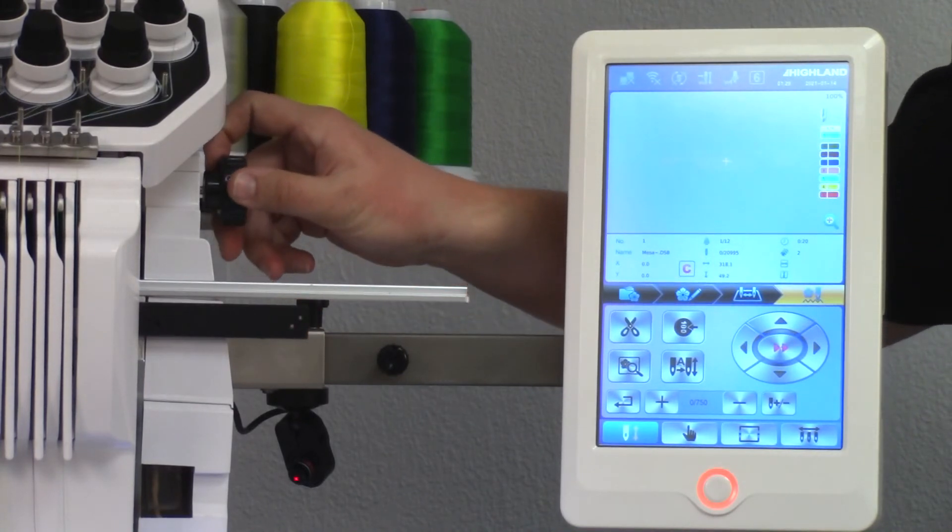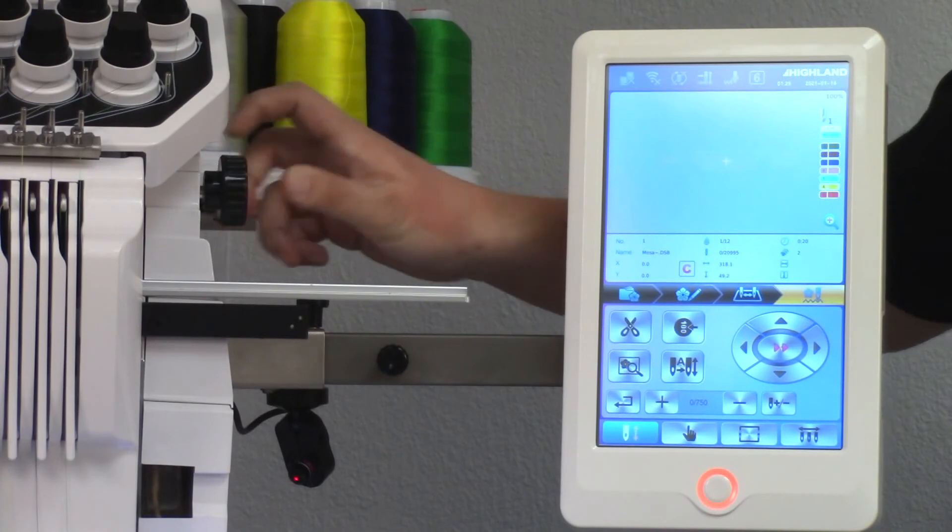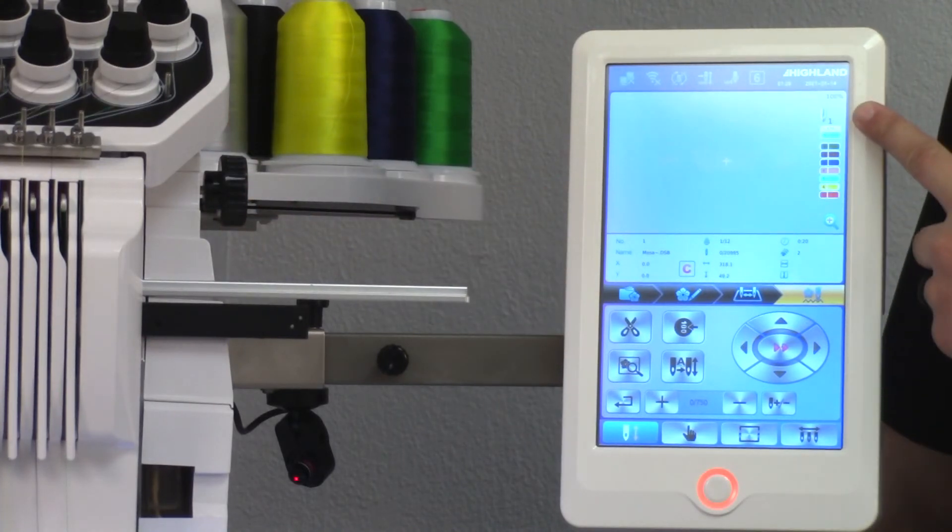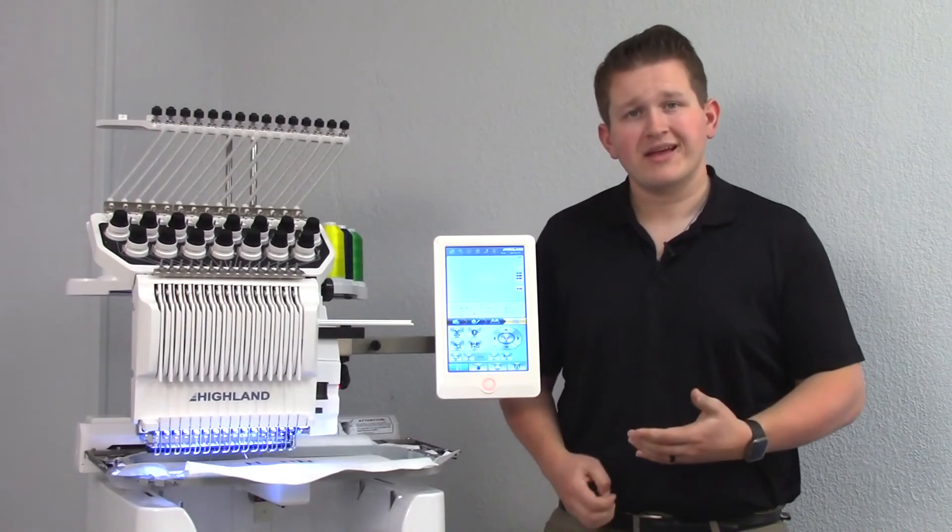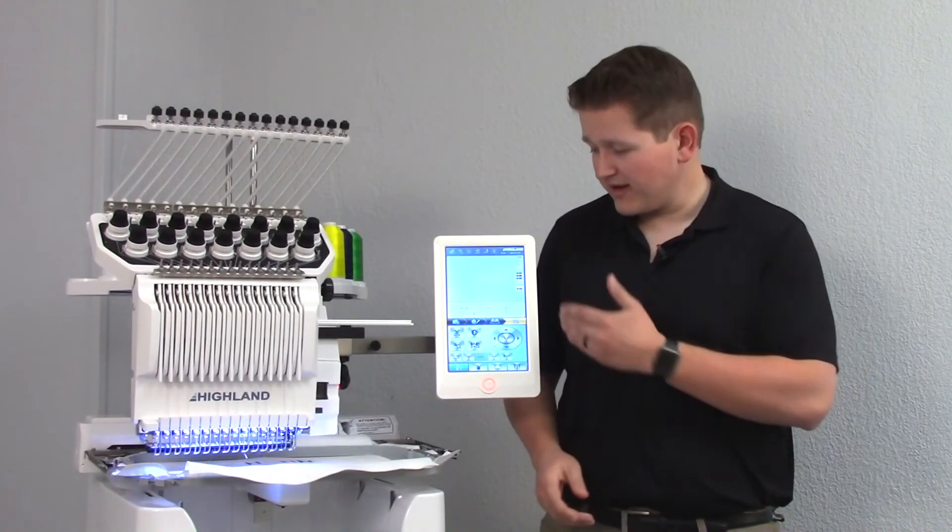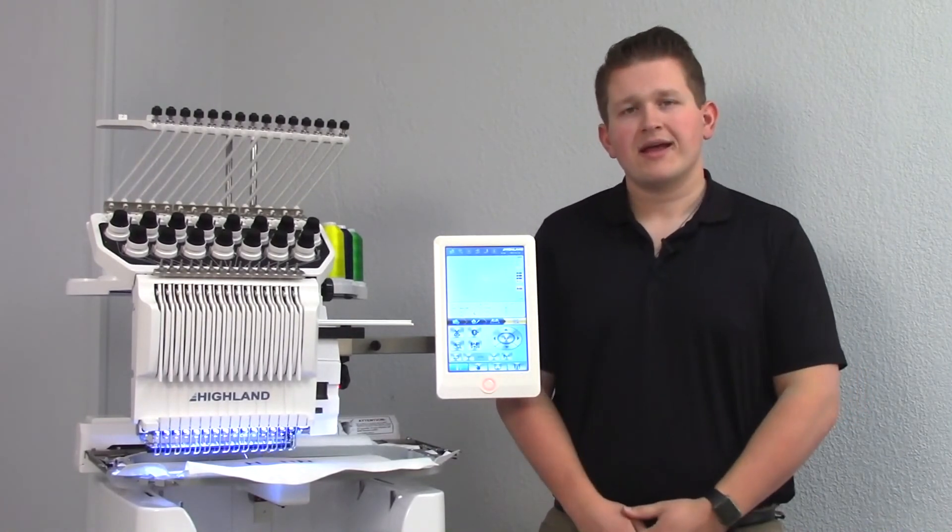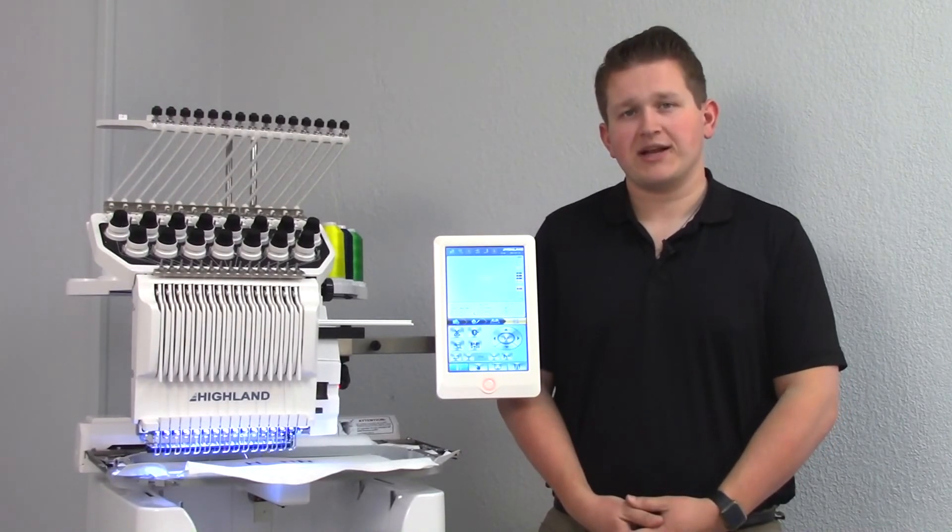Once I find this knob, I'm going to turn it very slowly until I get a number to show up next to this needle. This will tell me that a needle is back in sewing position. In our case, it's needle number one. And that tells me that I'm ready to begin using my machine again.